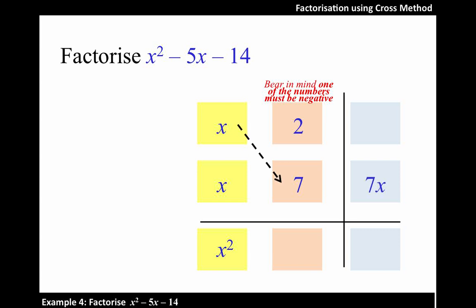Let's do the cross multiplication, and we get 2x and 7x. We know that the sum of these two terms must result in negative 5x. So, how to get negative 5x?